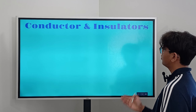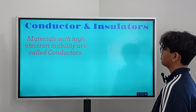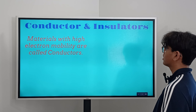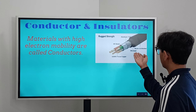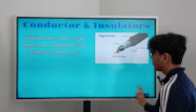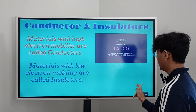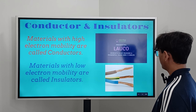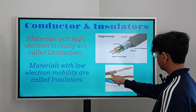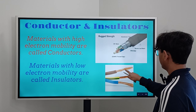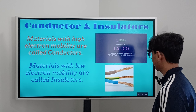Now we're going to cover conductors and insulators. Materials with high electron mobility are called conductors — here's an example of a conducting wire. Materials with low electron mobility are called insulators. In a wire, the insulators are on the outside and the conductors are on the inside.